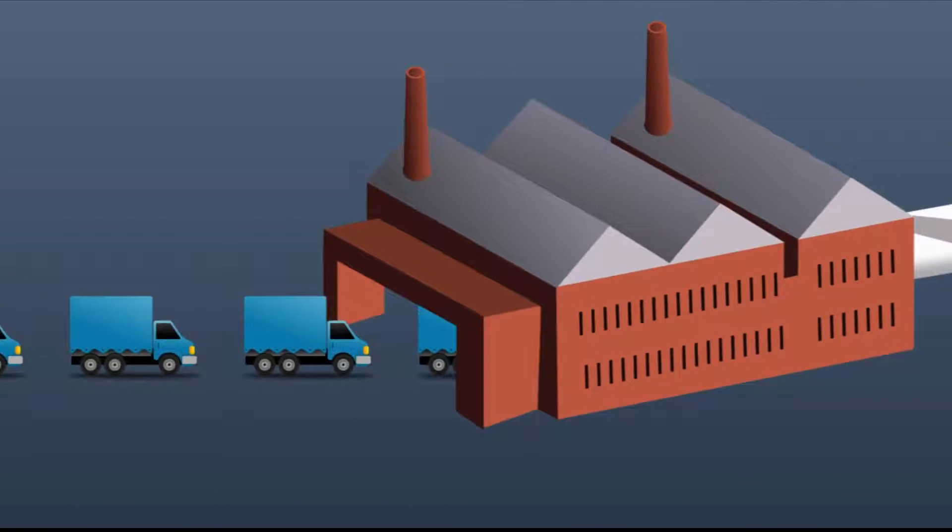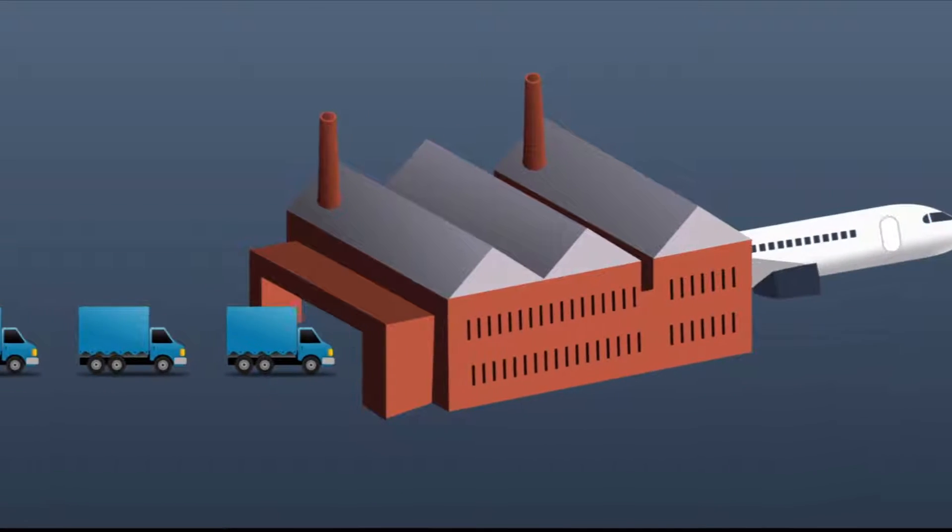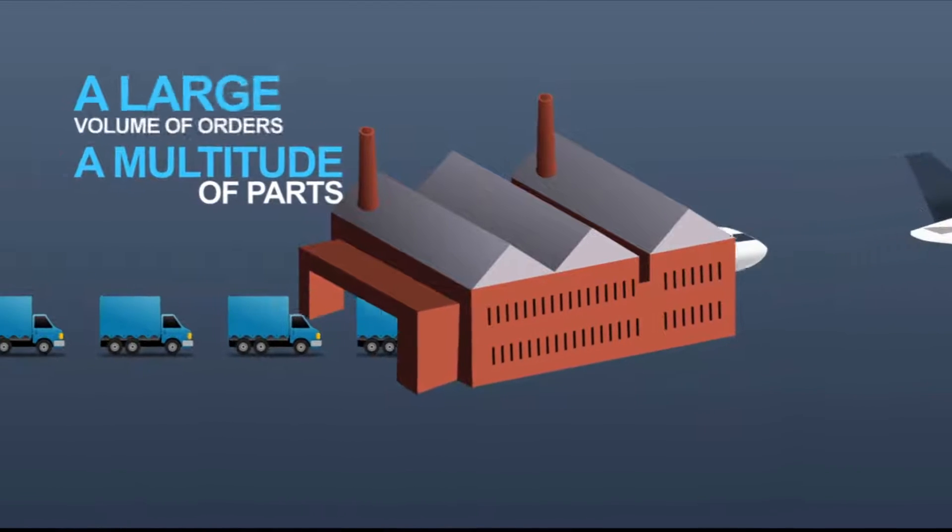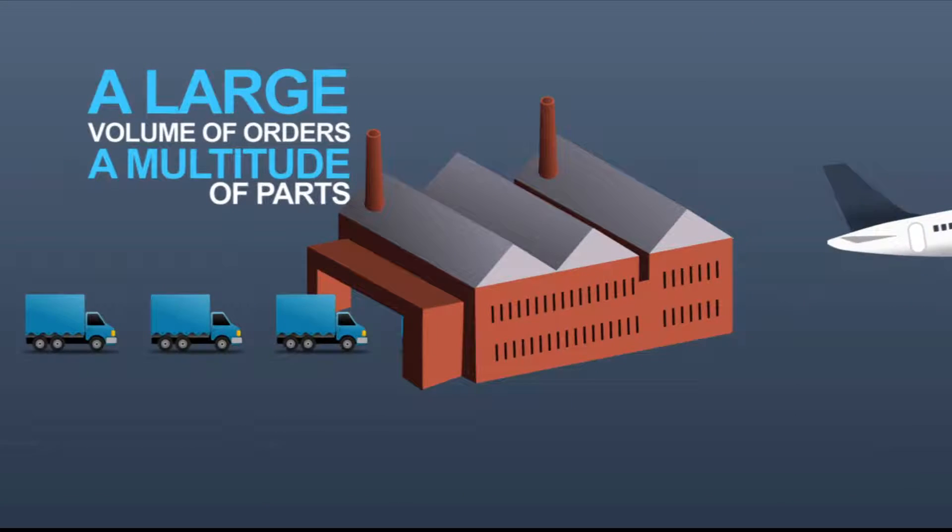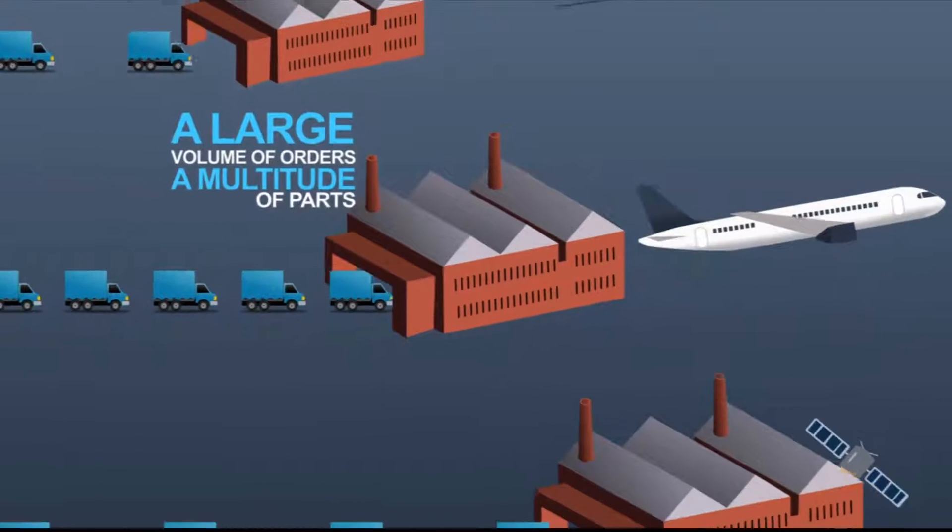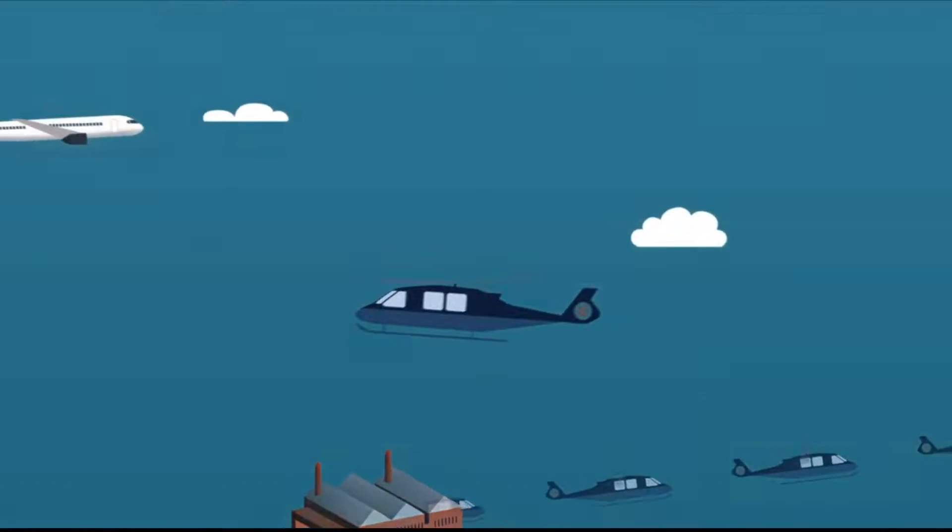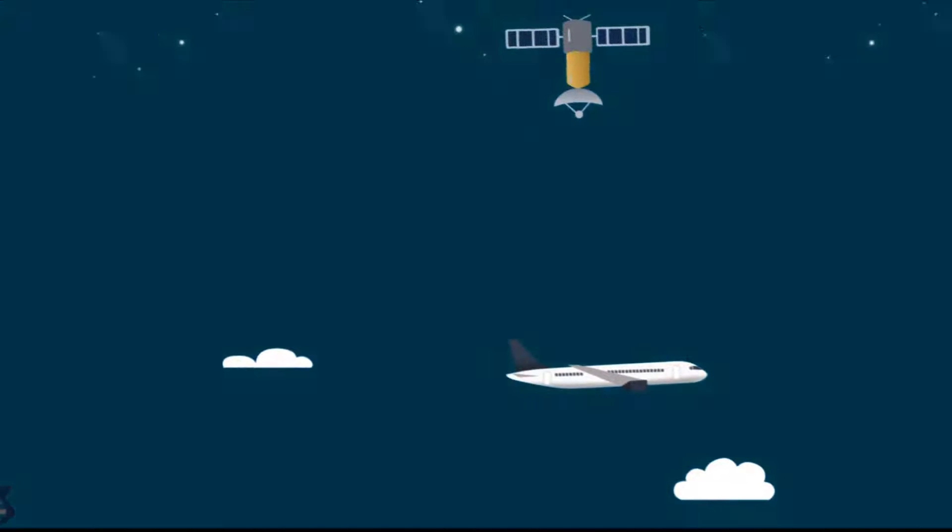Each time an aircraft is made, it is the result of assembling a multitude of parts, representing a very large volume of orders. And what's true for the Airbus assembly line is true for the whole aerospace industry, where not only aircraft but also helicopters and satellites are built.